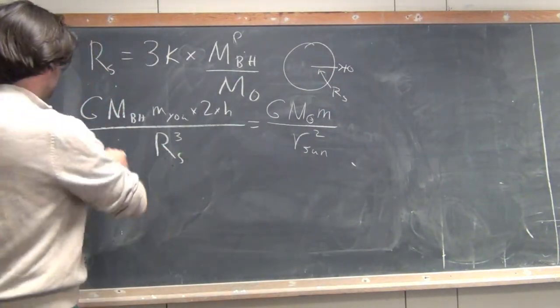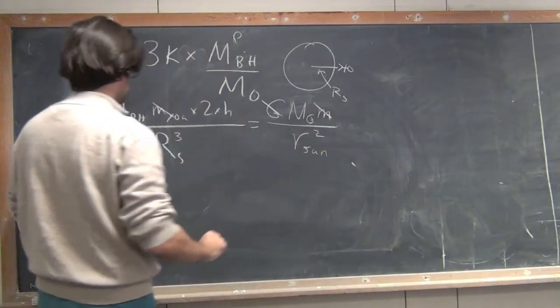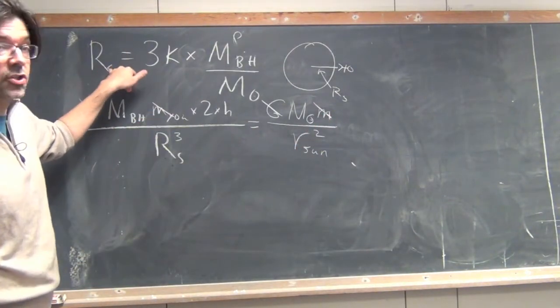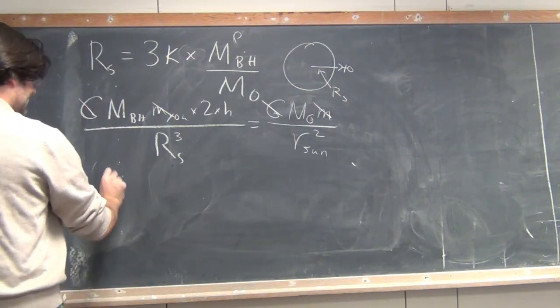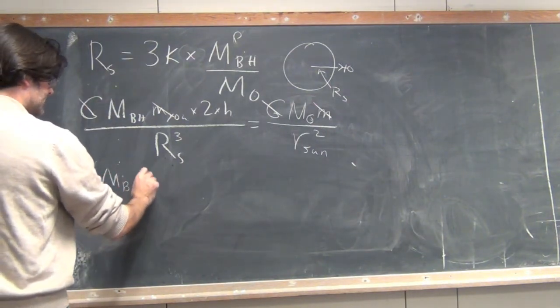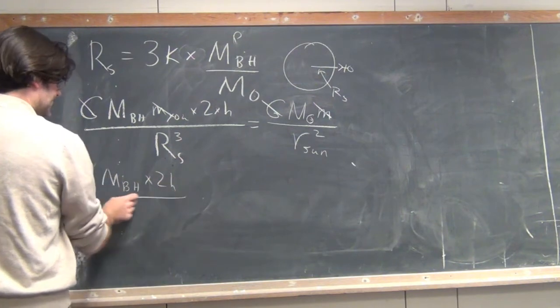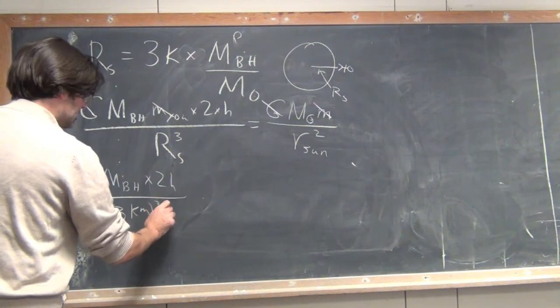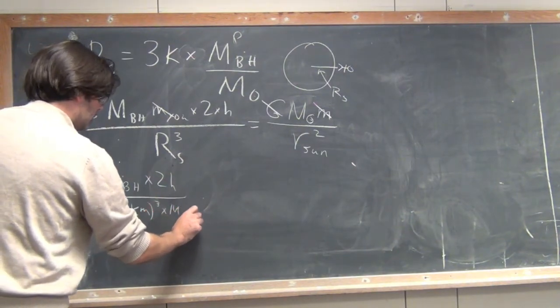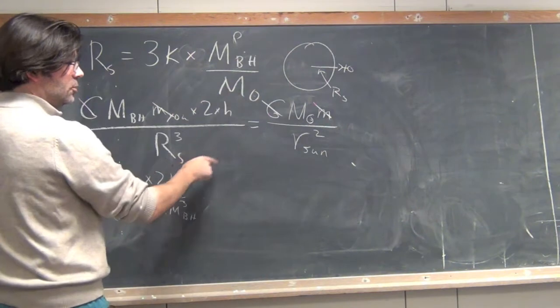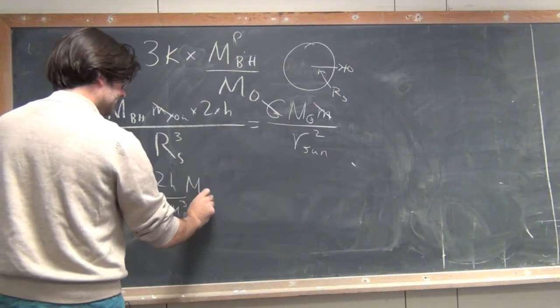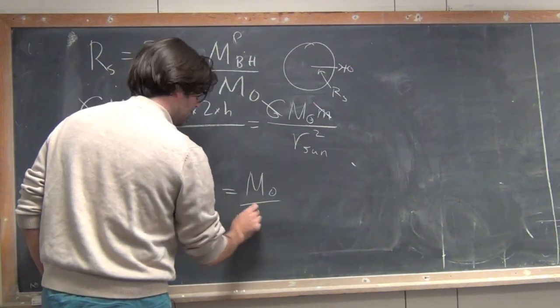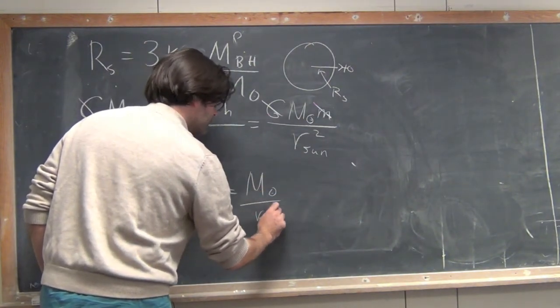Well, now I can simplify this considerably. I cancel off the G's, and I have this following equation. I can plug in for the Schwarzschild radius here using this equation, and I get that the mass of the black hole times twice your height divided by 3 kilometers cubed times the mass of the black hole cubed, then this M cubed goes into the numerator, is equal to the mass of the Sun over the radius of the Sun squared.